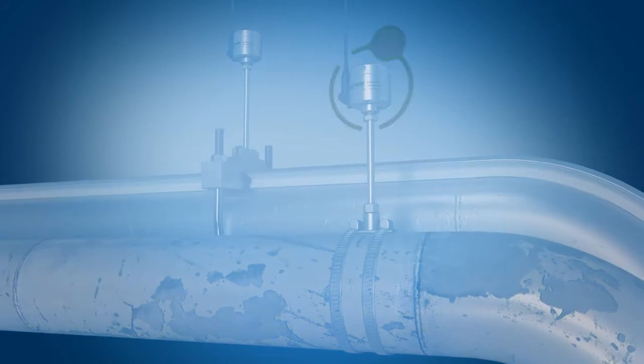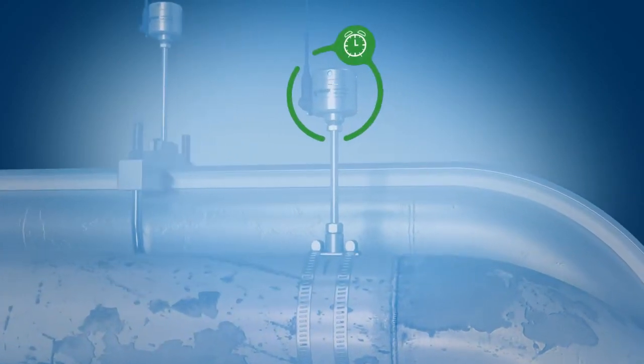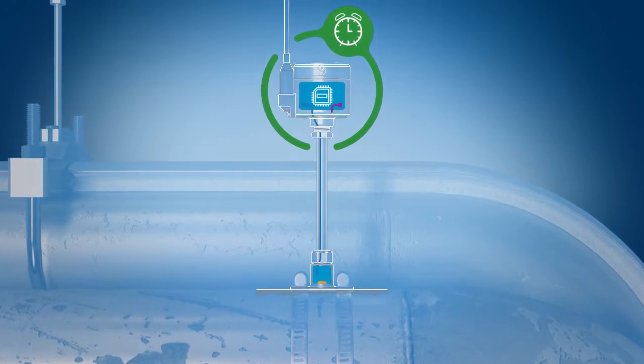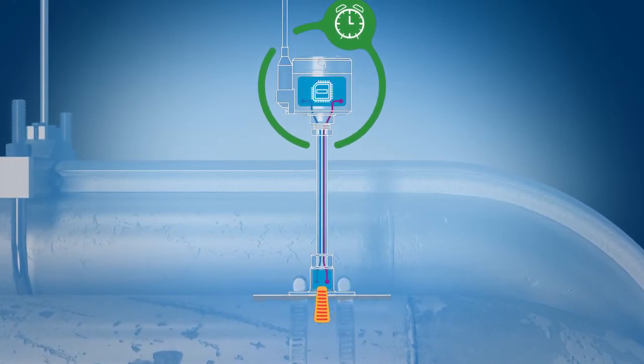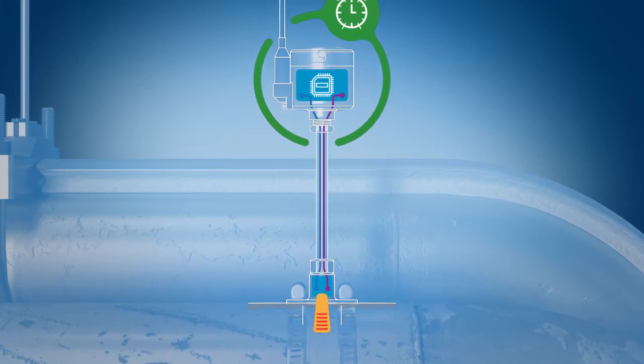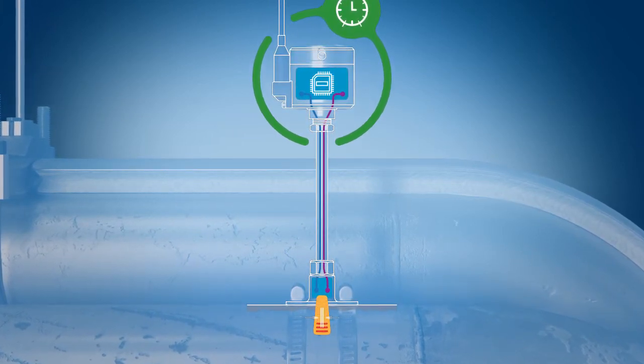Once installed, the sensor's internal clock wakes it up at user-defined intervals to take readings. During a reading, the sensor emits a short burst ultrasonic beam an eighth of an inch in diameter, small enough to track individual pits with an accuracy of one-thousandth of an inch.